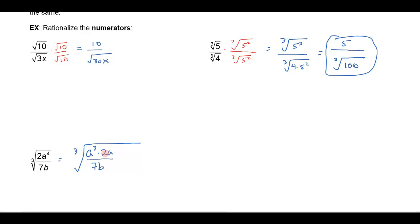So I already have an a cubed, but now I've got this leftover a right here, so let's multiply by another a squared and by 2 squared. That'll give me a 2 cubed and an a cubed, and if I do it in the numerator I'll have to do it in the denominator as well.